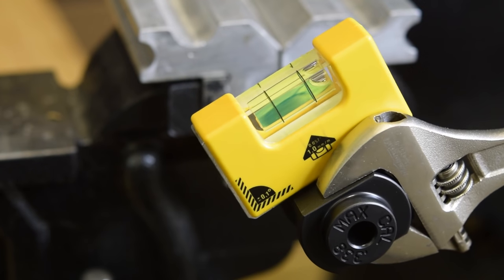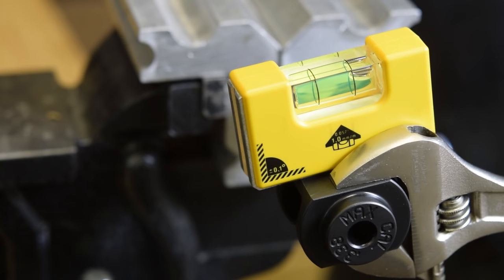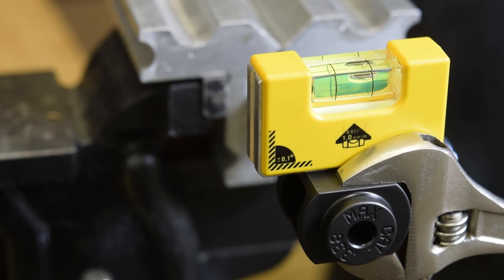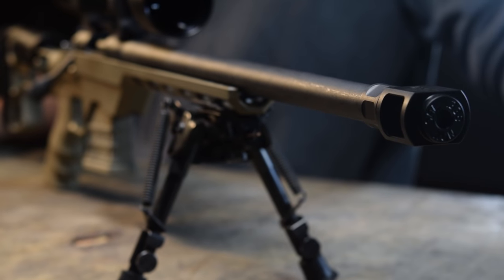Take your wrench and compress the crush washer at least one quarter turn and not more than three quarters of a turn. Your muzzle brake installation is now complete. Please visit our website at MDTTAC.com for further information.